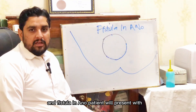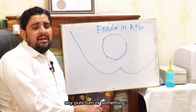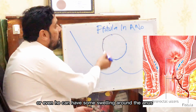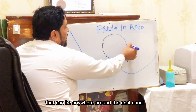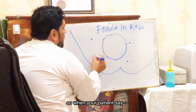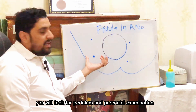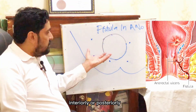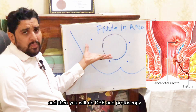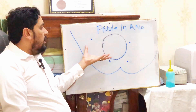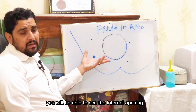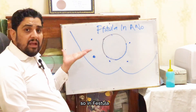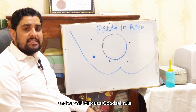In fistula-in-ano, the patient will present with a punctum — a small opening — and the patient may feel wetness or even have some swelling around the anus, which can be anywhere around the anal canal. On perineal examination, you can look for any punctum present anteriorly or posteriorly in the perineum. Then you will do DRE and proctoscopy. If it is a low-lying fistula-in-ano, you will be able to see the internal opening. If it is a high fistula-in-ano, you will not be able to see the internal opening. We will do another lecture on fistula-in-ano and discuss Goodsall's rule in detail.